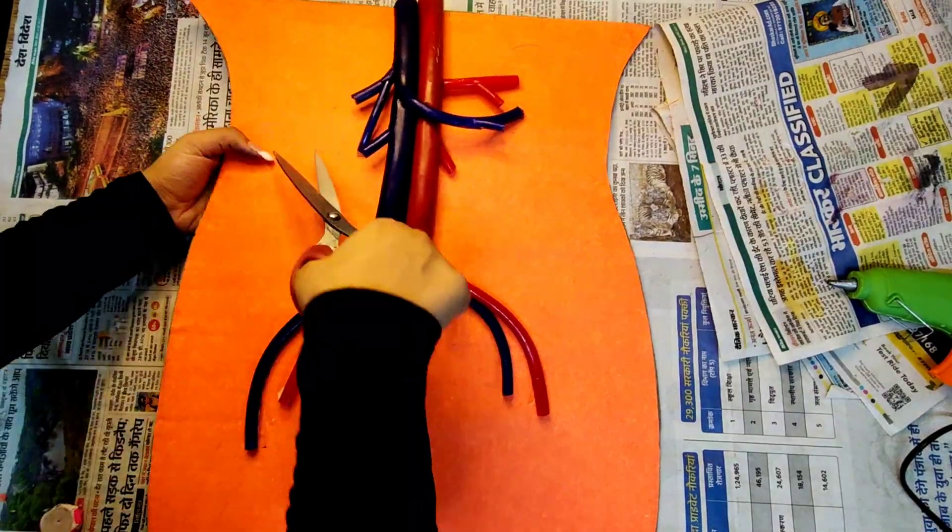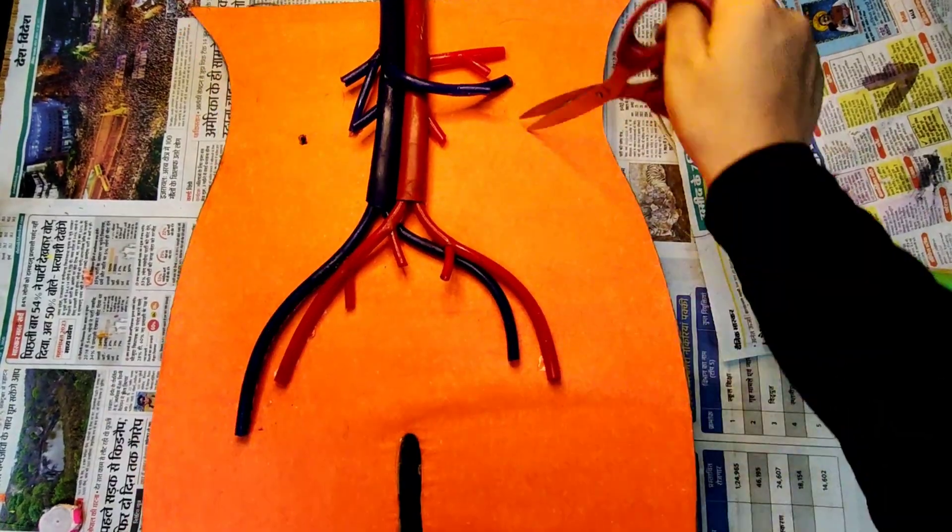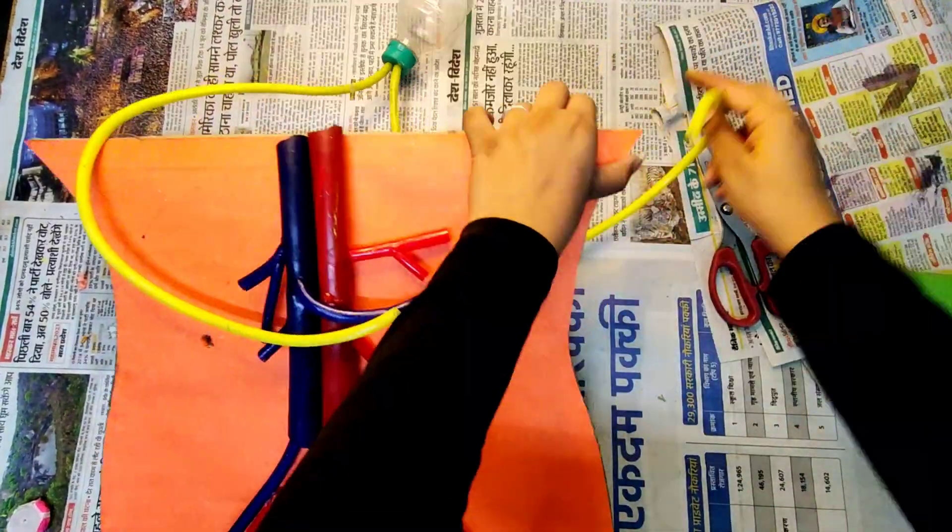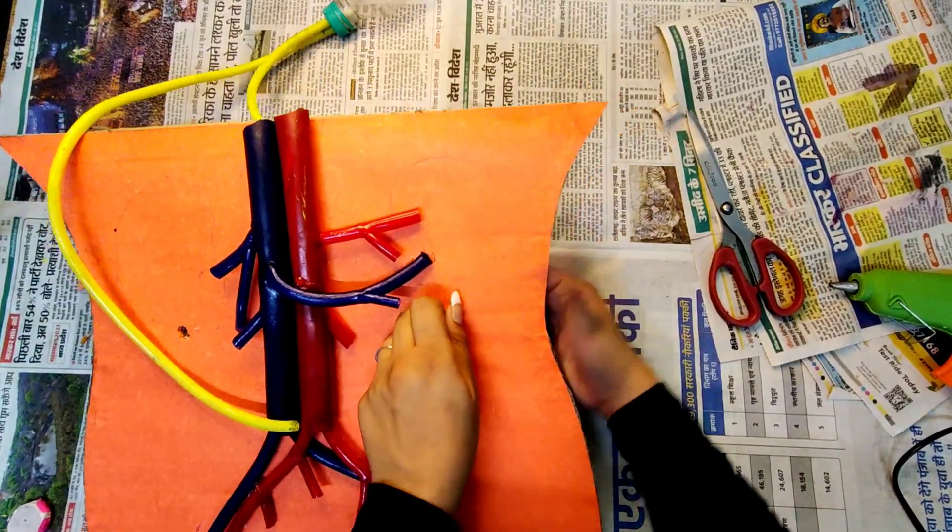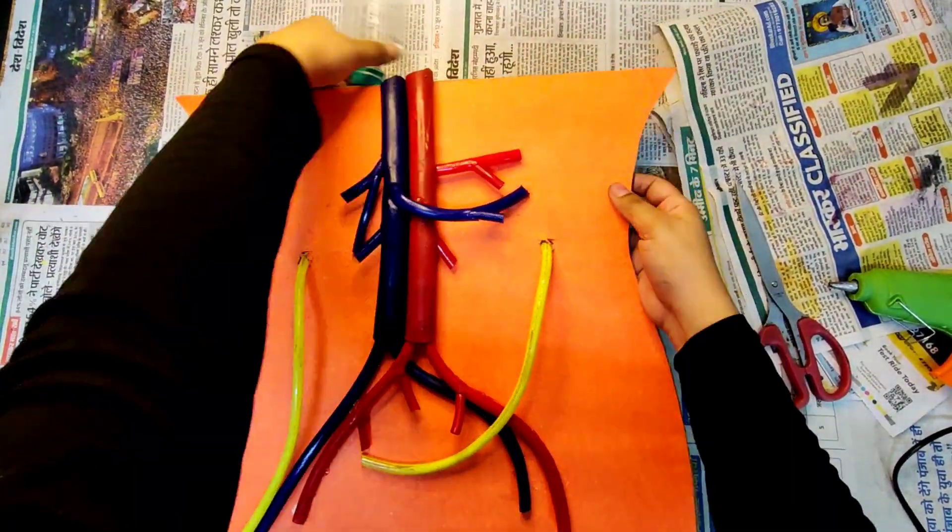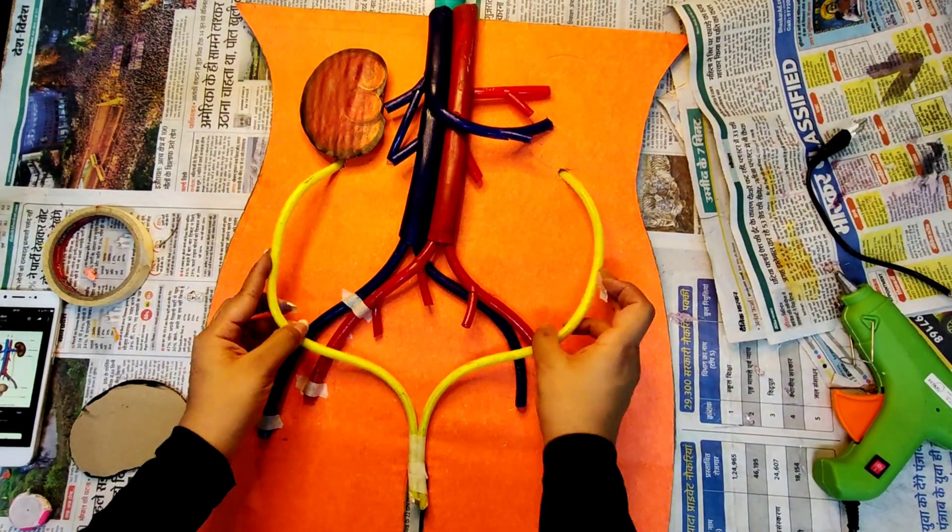We'll be making two holes on either side with the help of scissors for the ureters to pass through these holes. By ureters I mean those yellow pipes. After these ureters pass through the holes, attach them with the help of tissue tape as you can see in the video.